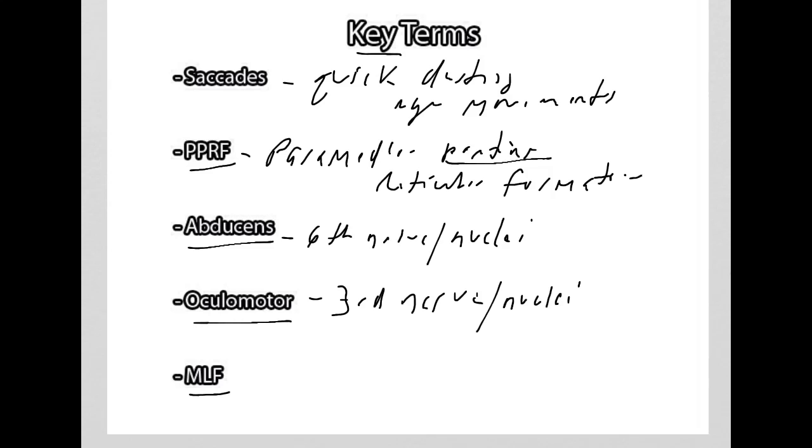And the final term that I like to define is something known as the MLF, which is short for Medial Longitudinal Fasciculus. And this is basically the wiring that helps connect all of this stuff together to allow us to engage in horizontal conjugate eye movement.